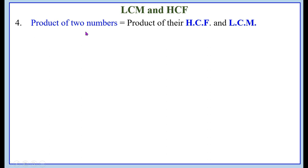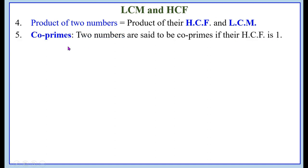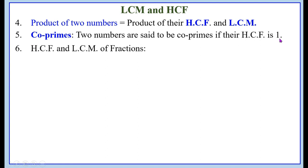Product of two numbers is equal to the product of their HCF and LCM — this is a very important point. What are co-primes? Two numbers are said to be co-primes if their highest common factor is 1.